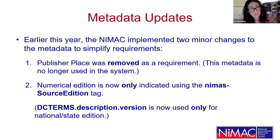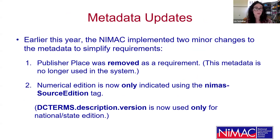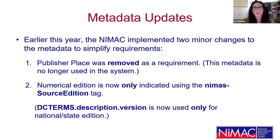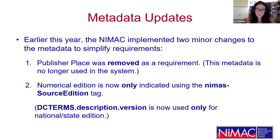Earlier this year, we implemented two minor changes to the metadata to simplify our requirements. One is that publisher place was removed as a requirement — this metadata is no longer used in the system and is okay if it remains in your file, it just gets disregarded. The second is that numerical edition is now only indicated using the NIMAS source edition tags, so the DC terms description version tag is now used only for national and state edition — it's not used in duplicate to provide the numerical edition information as well.